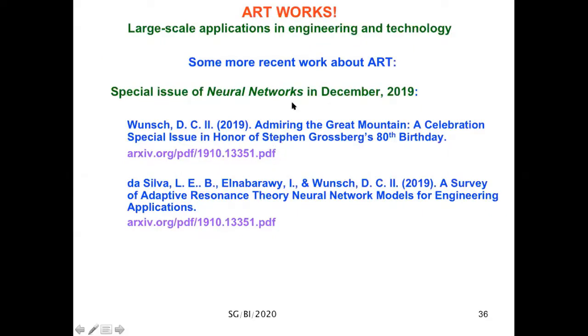This led to Gail's demonstration of how you can self-organize a hierarchy of cognitive rules, and these rules also give you confidence measures in how different categories predict higher, more abstract representations in the hierarchy. There have been many more recent applications of ART. For example, in the special issue of Neural Networks in December 2019, Don Bunch, the editor of that special issue, had an initial article where he summarized some of these developments, and then in a long article within the issue itself, they surveyed adaptive resonance theory neural network models for engineering applications up to the present.